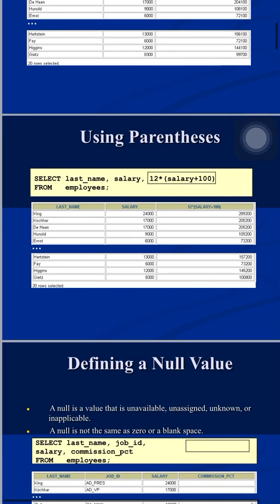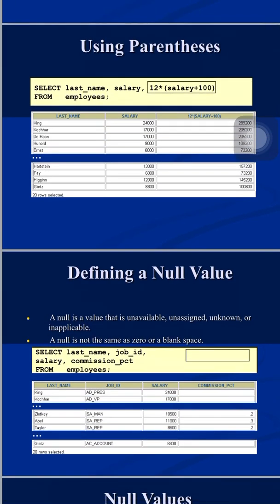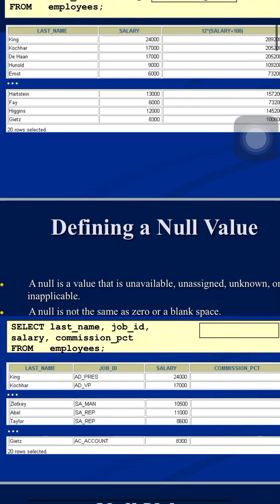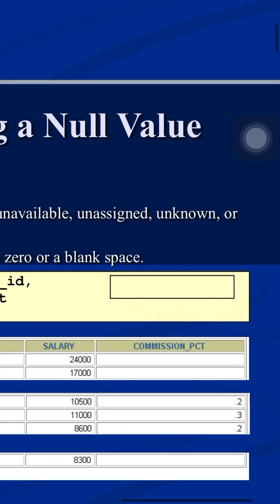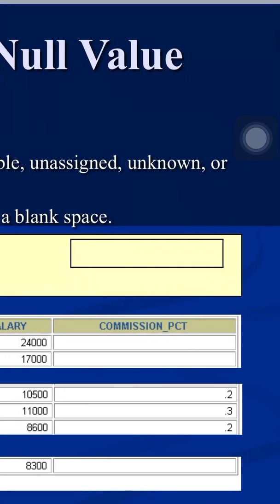Sometimes in database or programming we encounter null values. Null is a value that is unavailable, unassigned, unknown, or inapplicable. We cannot compare null to zero, a blank space, or any default value. For example, in the employees table there is a column called commission_pct. Not all employees work extra, so only those who do have a commission_pct value; for others it is null. When you print null values, nothing is displayed in the output window — null is not printed as a keyword.